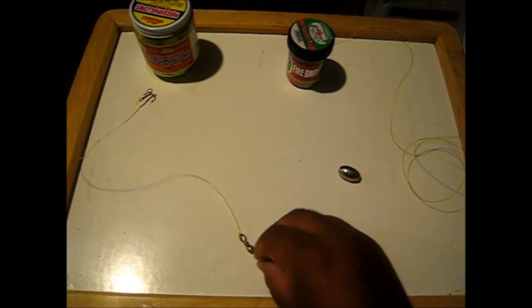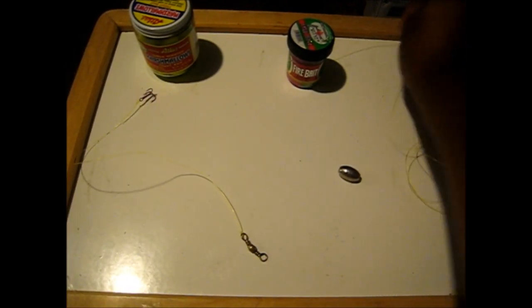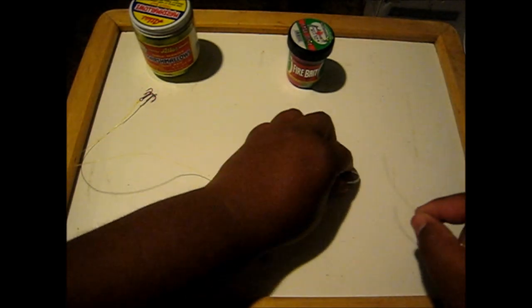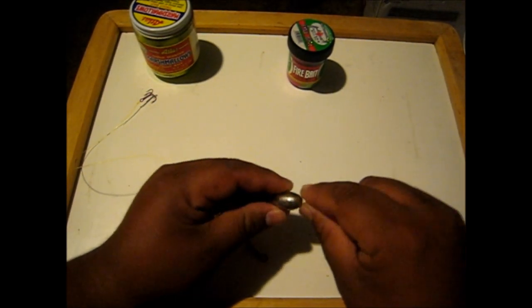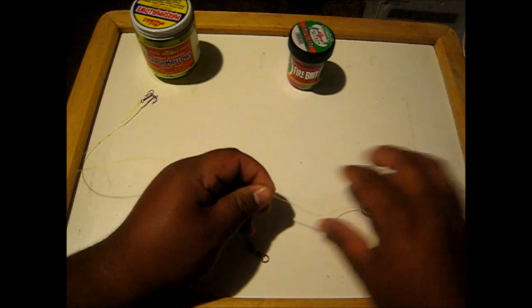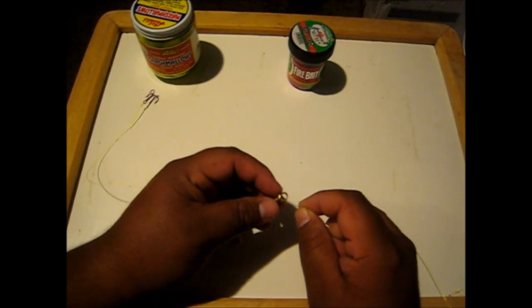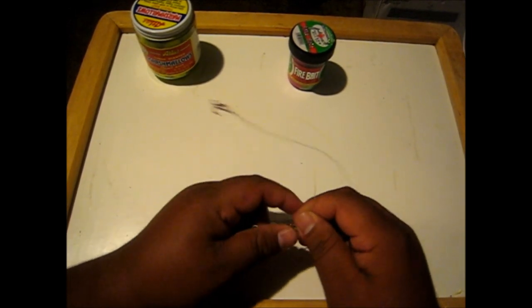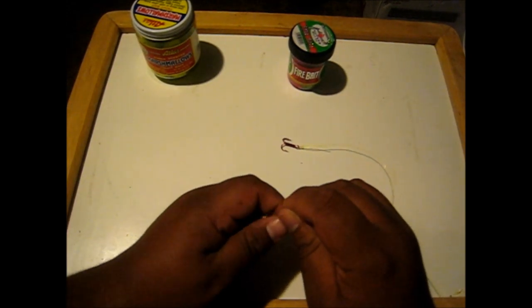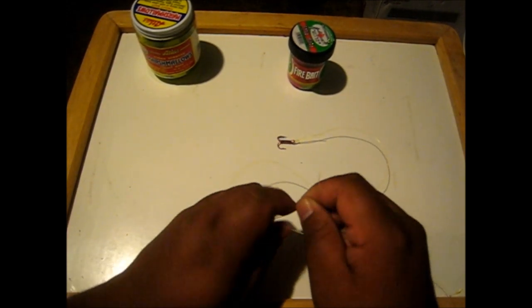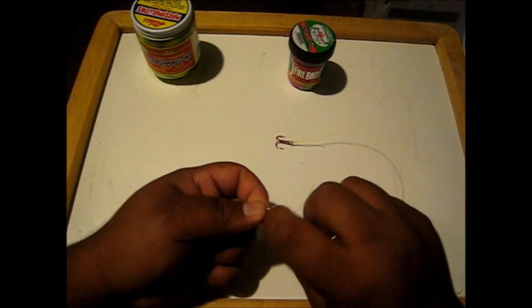And next what I do is I take the line that goes to the pole and I put in the egg sinker. And then I proceed to tie the other end to the swivel, and again I'm using the same regular fisherman's knot as before.